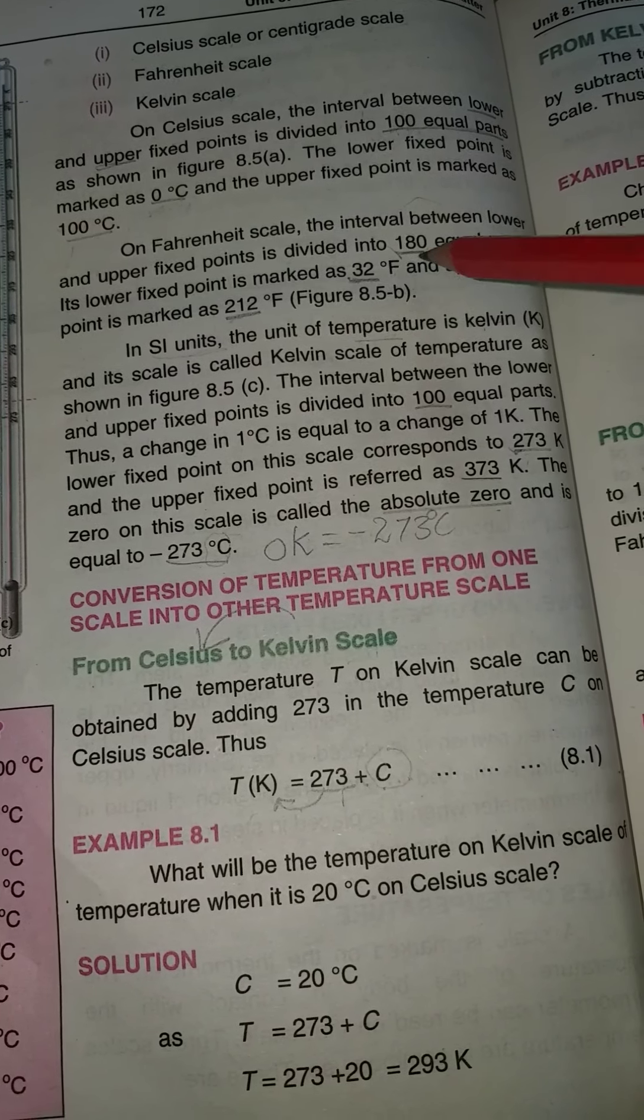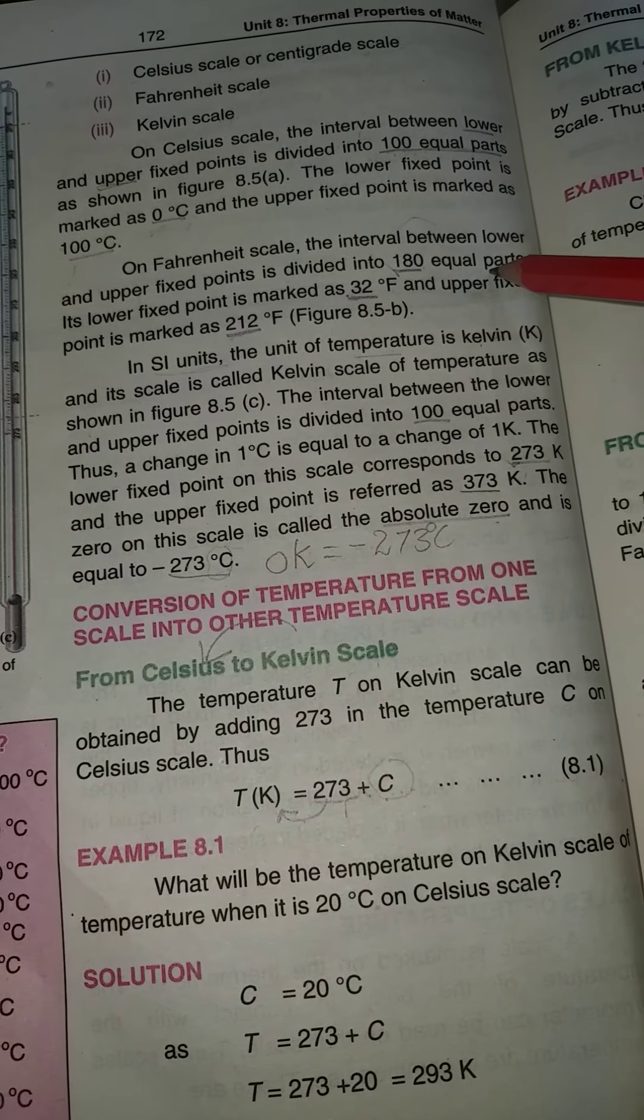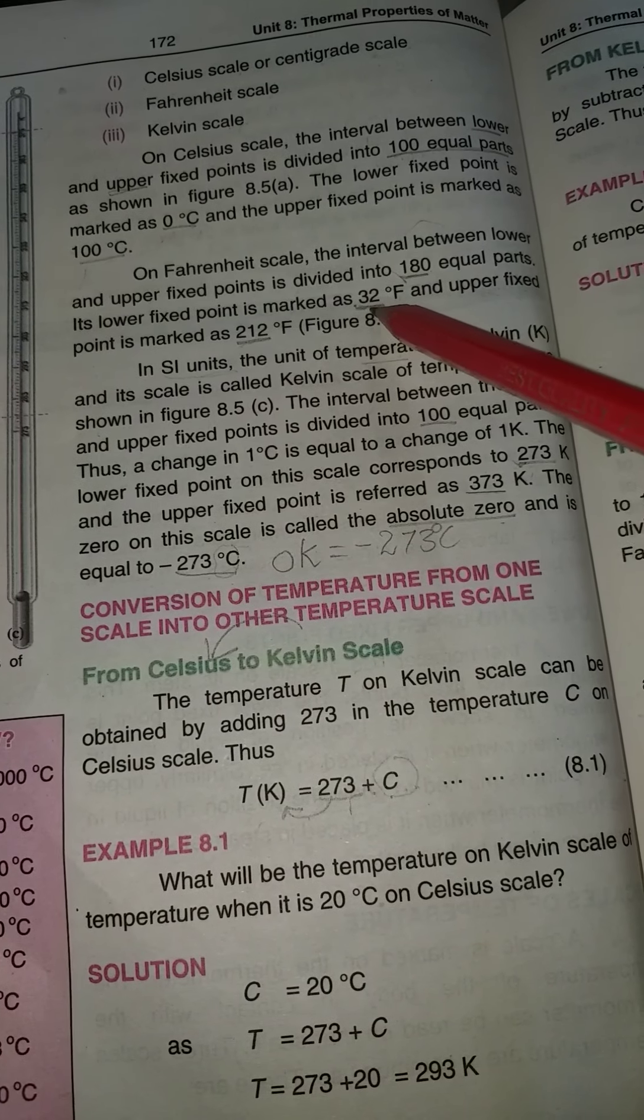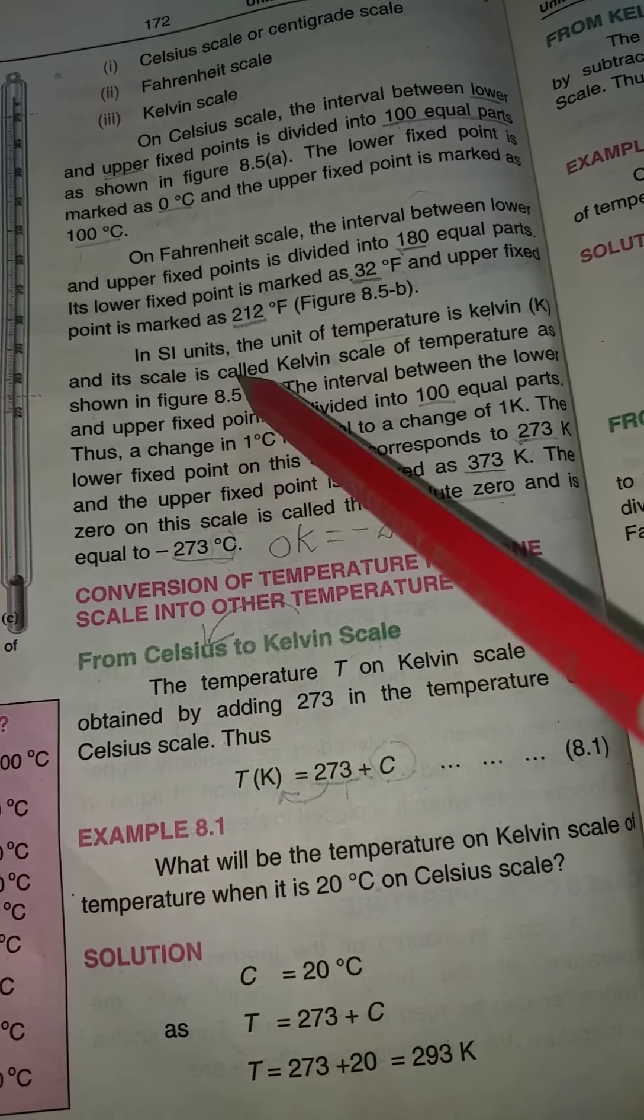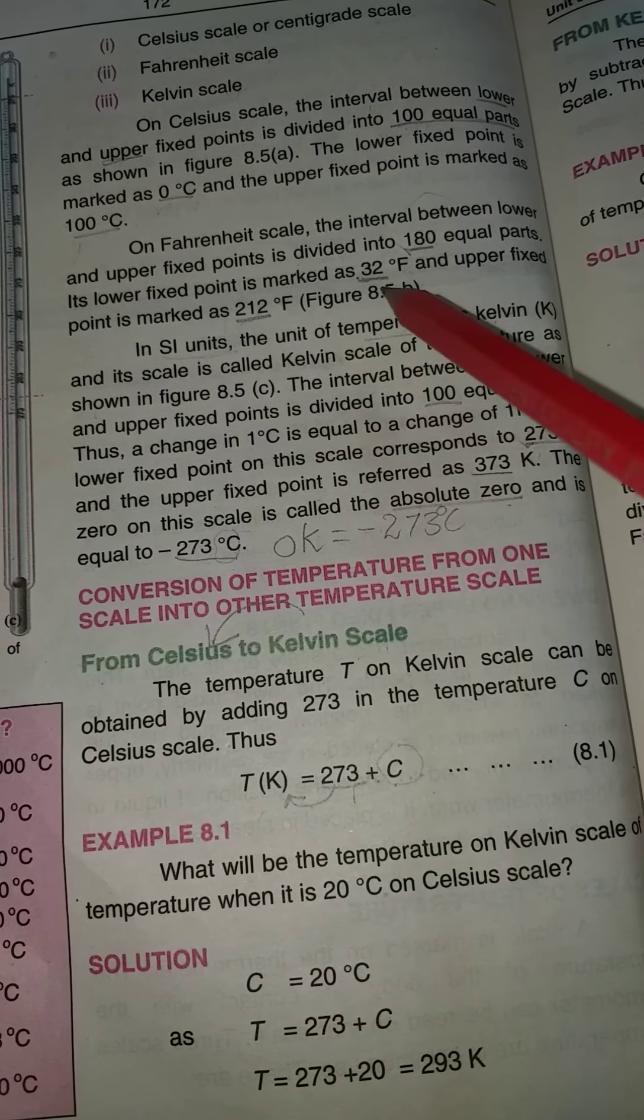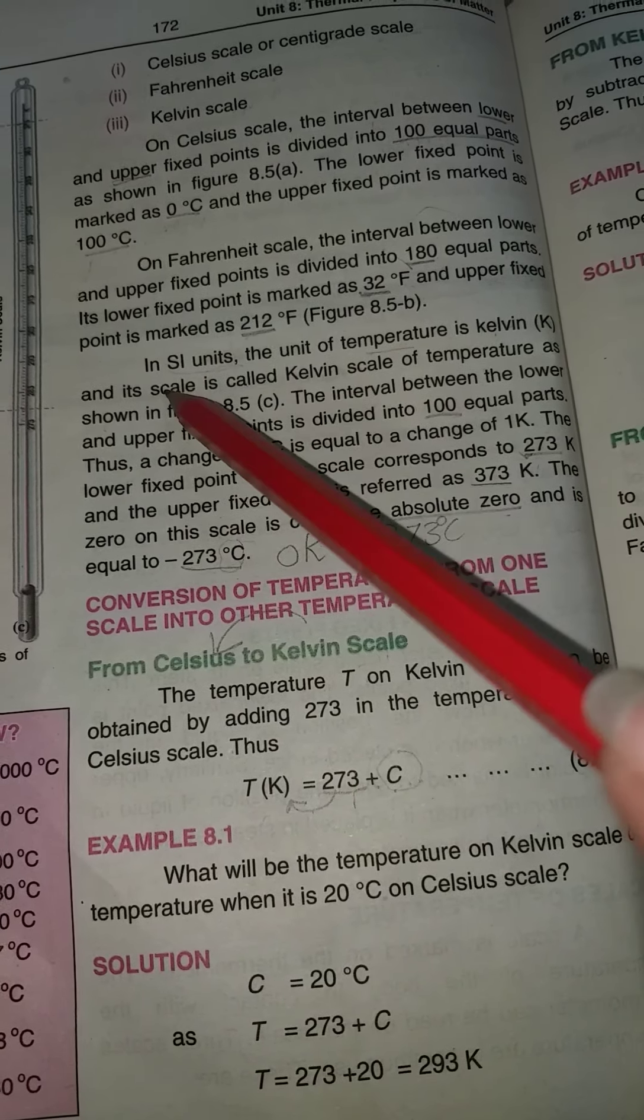The Fahrenheit scale is divided into 180 equal parts. The lower point is 32 degrees and the upper point is 212 degrees.